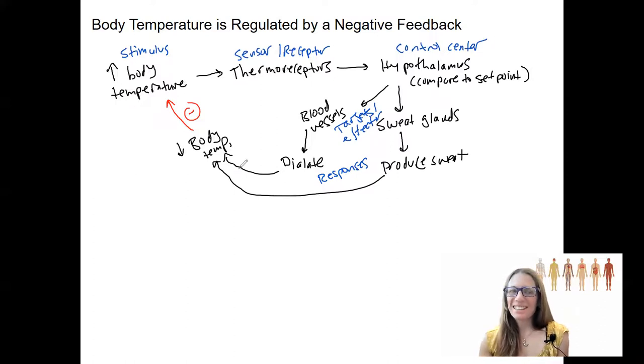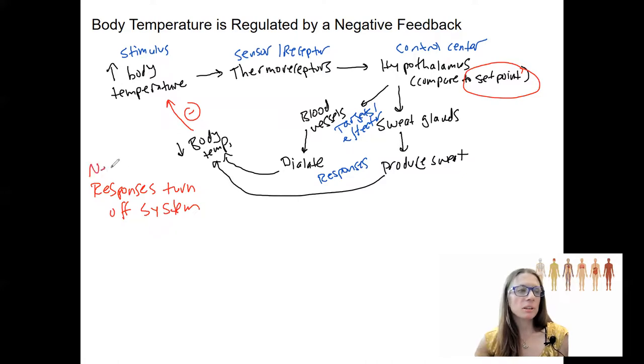Here's the part I don't think I said. So what the effects of these responses is to turn off the system. Right, by having these two happen, we have a decrease in body temperature. Now our detection is going to be, okay, the set point has been reached. So this is what that negative feedback means, turning off the system by counteracting the stimulus.